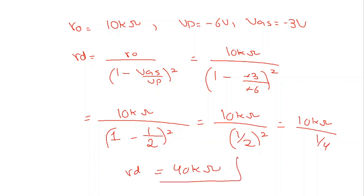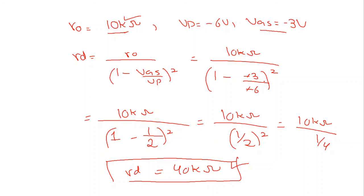So, the resistance of the channel at VGS equal to minus 3 volt is 40 kilo-ohm, whereas the resistance at VGS equal to 0 volt was 10 kilo-ohm. We can safely say that as we make the gate to source voltage more and more negative, the resistance of the channel increases, as is evident from this equation and from this example. Thank you.